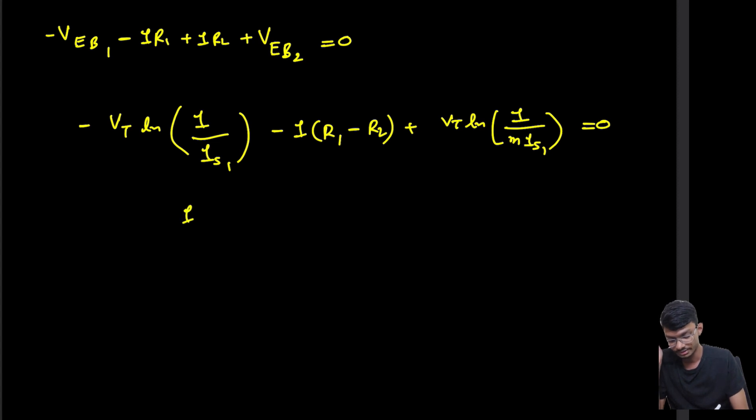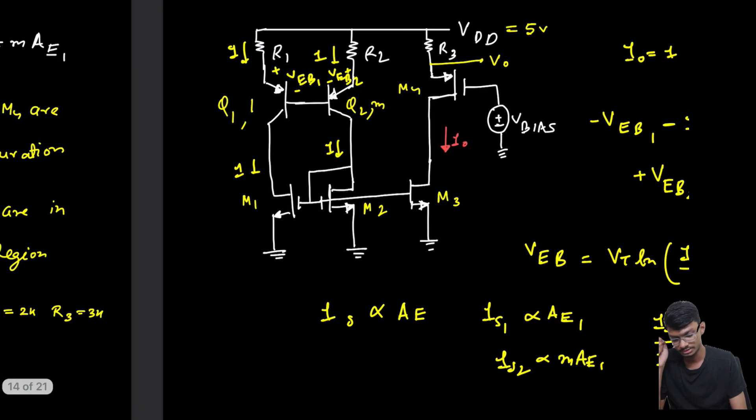So basically, I(R2 - R1) equals VT ln(m). This will be the equation. M in our case is given as 10.